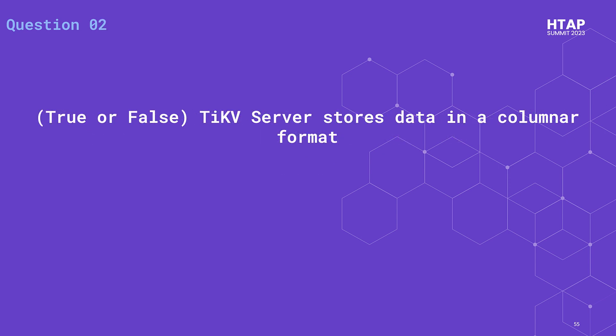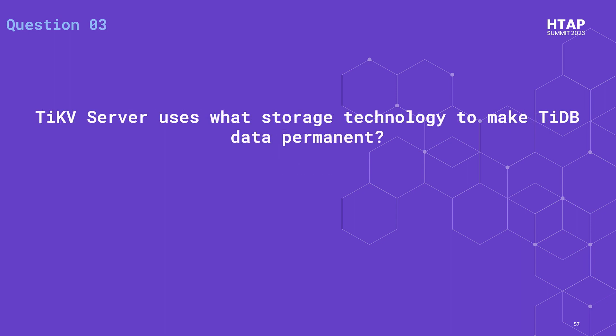Question two: true or false — TiKV server stores data in a columnar format? This is false. TiKV stores data in an OLTP-type row key-value format and is used for OLTP. Columnar storage is used for OLAP or analytics processing — that's TiFlash. Question three: TiKV server uses what storage technology to make TiDB data permanent? The answer is RocksDB. There are two instances of RocksDB inside TiKV — one handles the key-value pair store and the other handles logs.